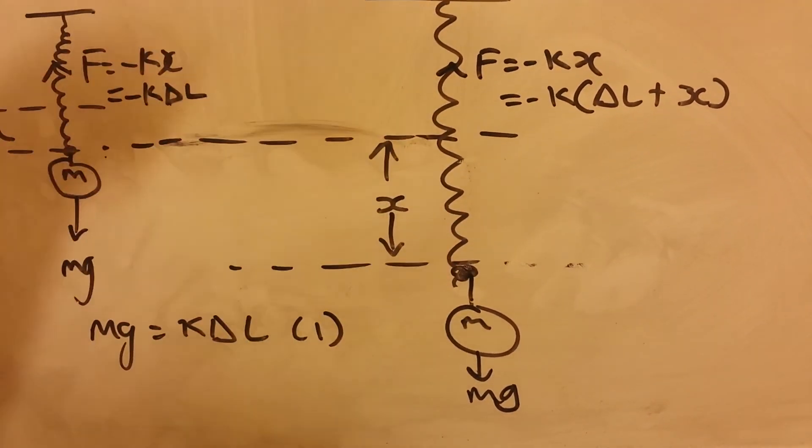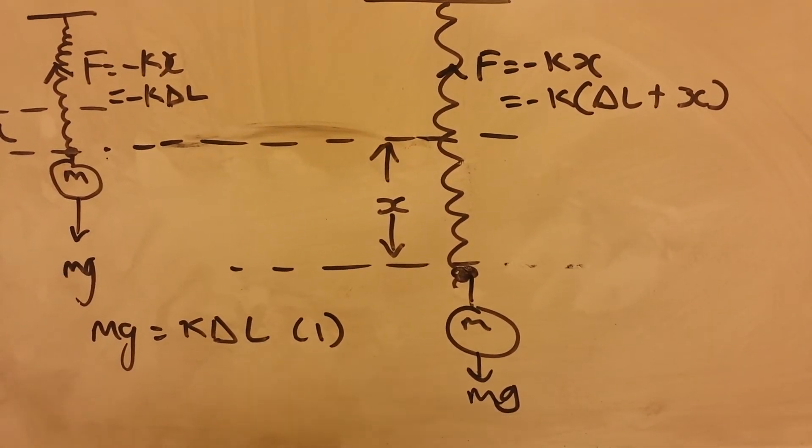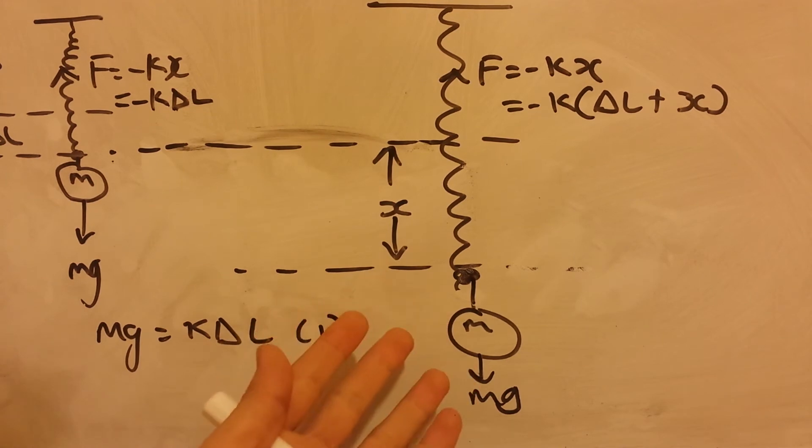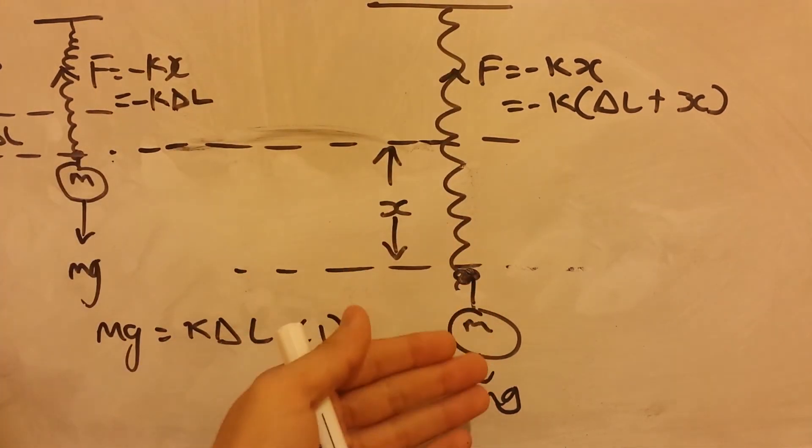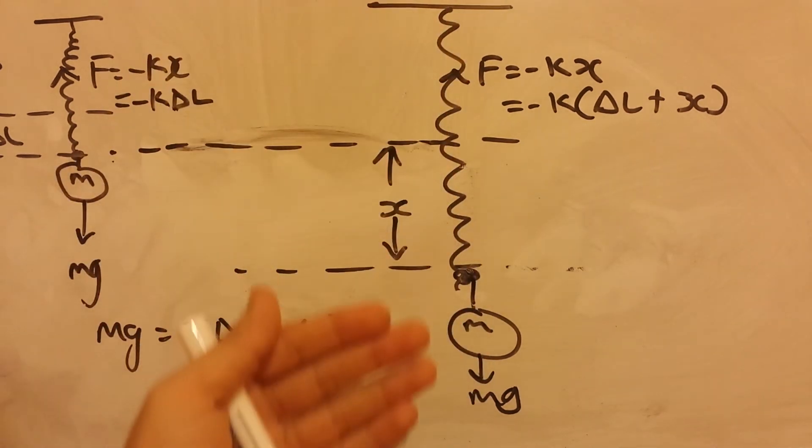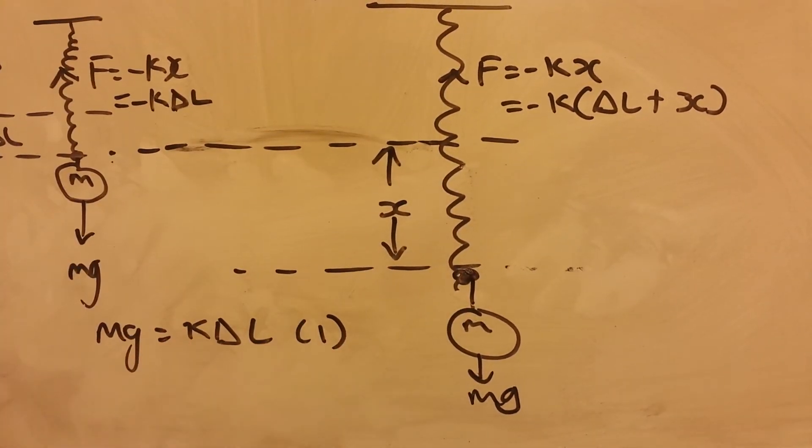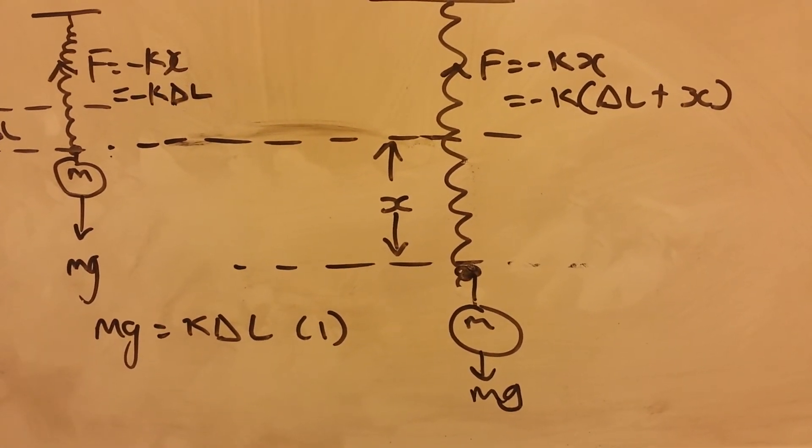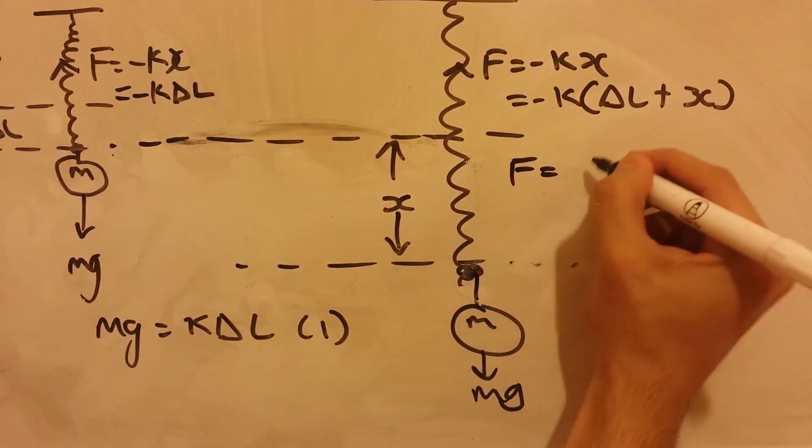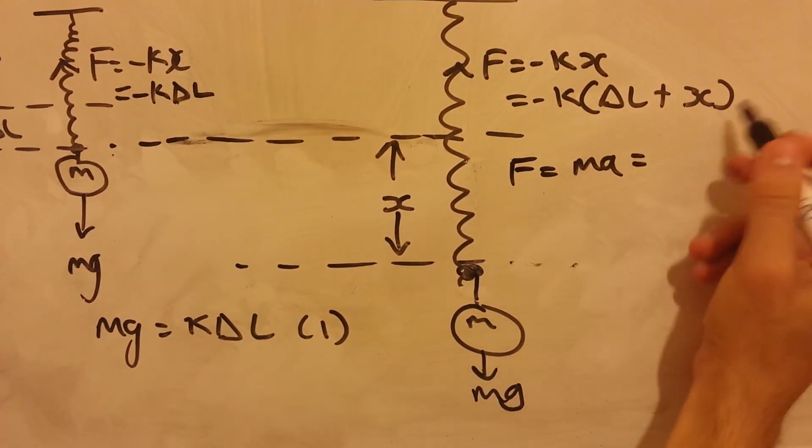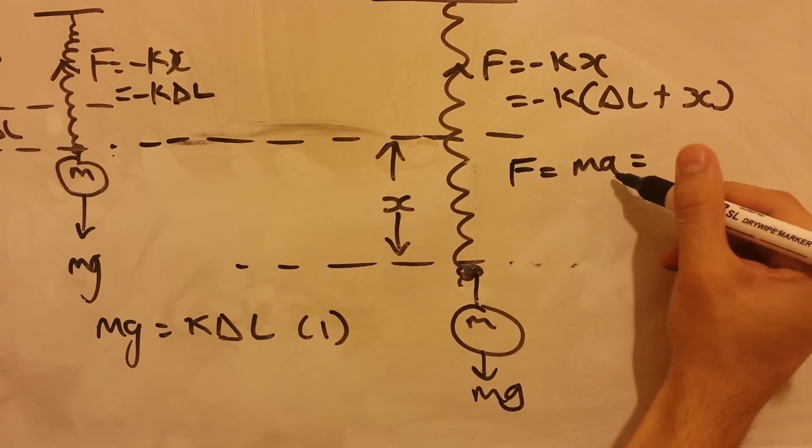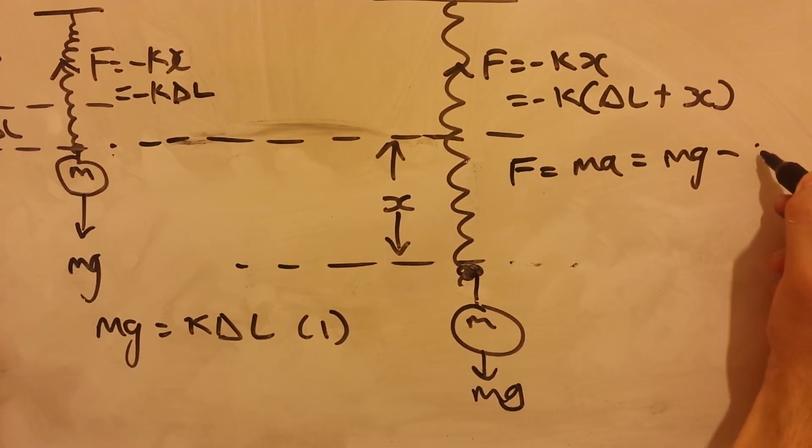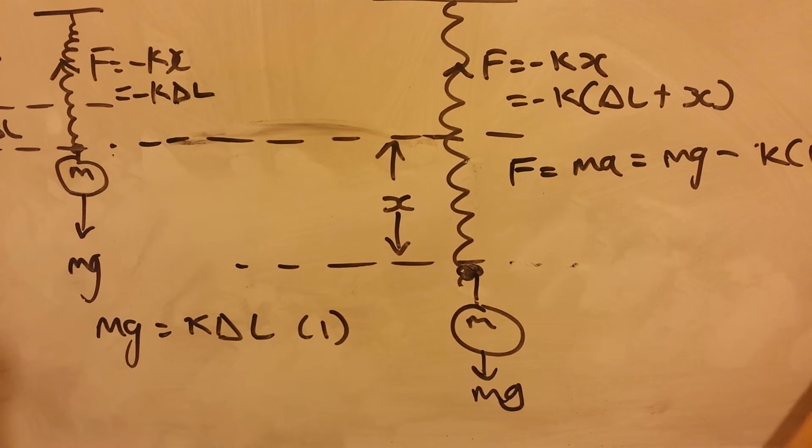This system obeys Newton's second law, and we know that if we let go from this mass, so I displaced it, and if I let go, then the system will have, the mass will have a continuous change in speed through its cycle, because there's force acting on it, and so there's acceleration. And so because of this, we can say the resultant force, the spring force is equal to ma, and that's equal to mg, take away the spring force.